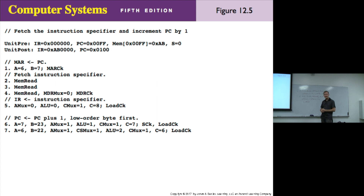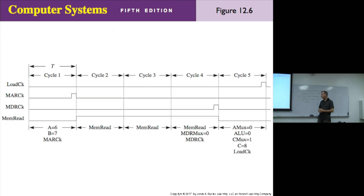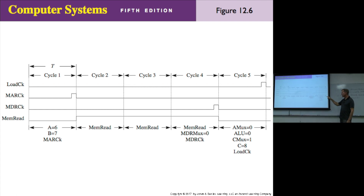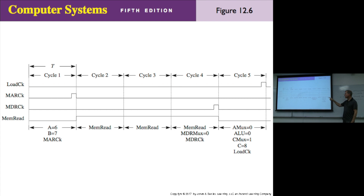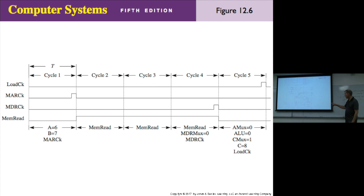Student question: why does the memory read signal have its own cycles two and three, but then share cycle four with the MDR MUX? The answer involves looking at figure 12.2 — the mem-read line is at the very bottom of the figure. That line is not a clock pulse; it's a control signal that tells the memory chip when to put data on the bus.